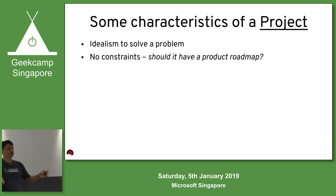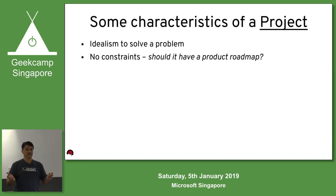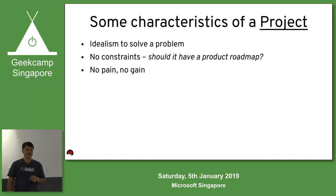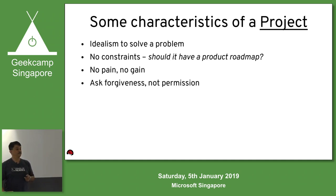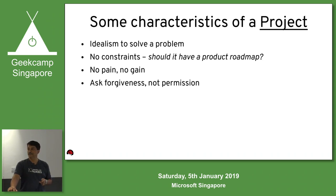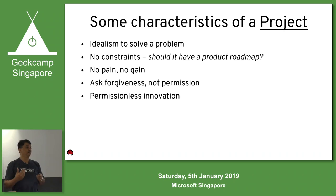You have no constraints — you just want to do this thing. Does it have a product roadmap? No, you're just going to do it. There will be some pain — otherwise there's no gain. You'll go through Haskell or whatever. You do a lot of 'just try it, just break it, don't have to ask permission — ask forgiveness.' That notion is the idea of permissionless innovation: go ahead and do it, see what happens. If you innovate something new, great. If not, stop, start something new, learn from it and move on.